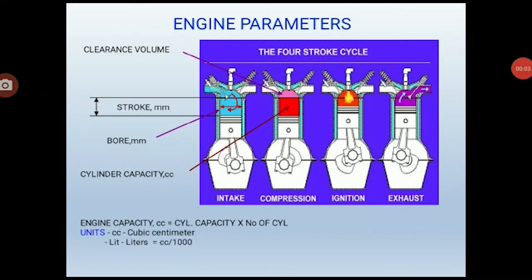Let us discuss the four-stroke diesel engine cycle. In this schematic diagram, some engine parameters are given. Let us discuss them one by one. Bore is nothing but the cylinder diameter. Another engine parameter is the stroke, which defines the distance between the topmost point of piston travel to the bottommost point of piston movement.